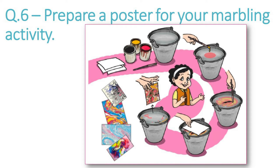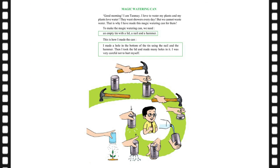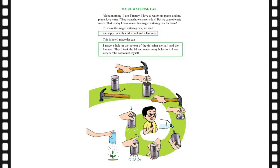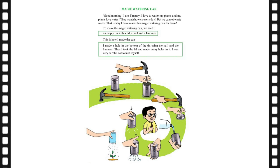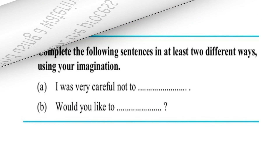Now let's look at the second activity: Magic Watering Can. We will solve its questions and answers. Question number one: present the process of making and using a watering can. This question also requires you to make a watering can, present the process in your class, and use the can in your school.